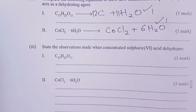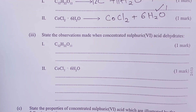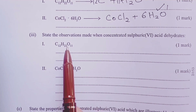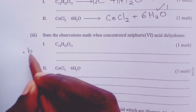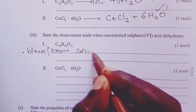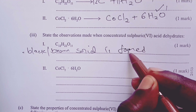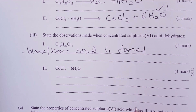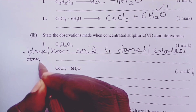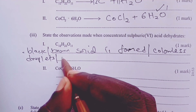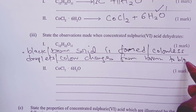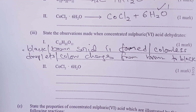Part 3 asks for observations when concentrated sulfuric acid dehydrates sucrose. A black or brown solid is formed — black if brown sugar is used, brown if white sugar is used. We also expected observation of colorless droplets due to the loss of water. Color change from brown to black was also accepted. Any of these observations earns one mark.